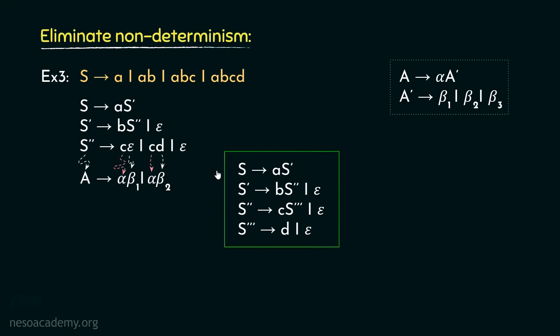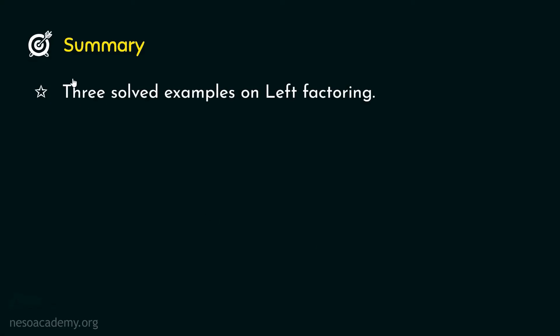This is the deterministic version of the non-deterministic grammar. Remember, we need to keep performing left factoring until all productions are free from non-determinism. In this session, we observed three solved examples on left factoring. With these many solved examples, I believe you have now gained a crystal clear concept of left factoring. With this session, we have come to the end of our second chapter. I hope to see you in the next chapter. Thank you all for watching.